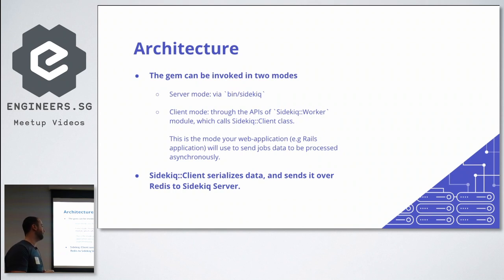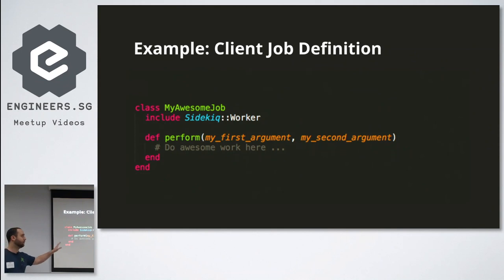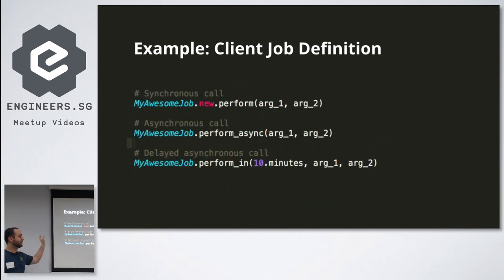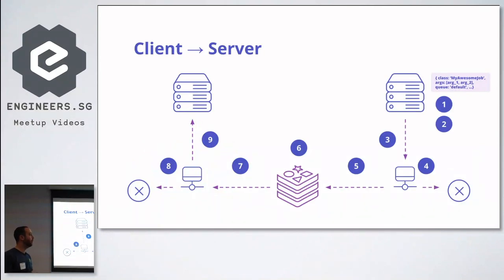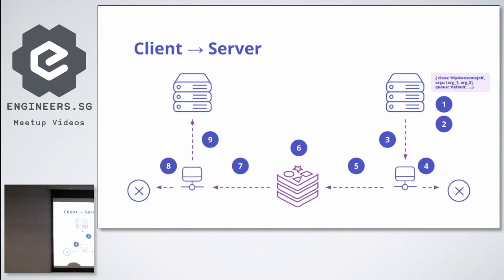I'll start by talking about the journey between the server and client. This is an example of a job you can write in Rails — you just need to implement the perform method and you can do work there. You can also specify options and arguments. This is how you can call any job you've defined — either synchronously, asynchronously, or in delayed execution. When you call the job via perform_async, Sidekiq wraps the job into a hash representing the arguments, the data, the names, and puts the queue name.